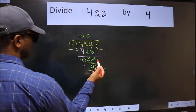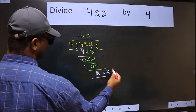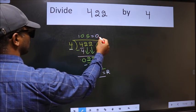No more numbers to bring down. So we stop here. This is our remainder, and this is our quotient.